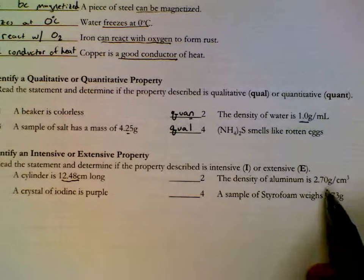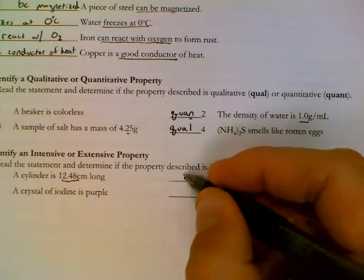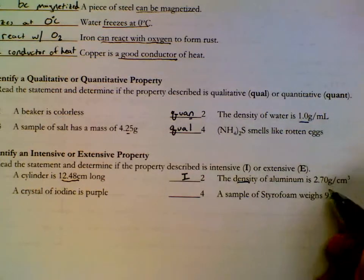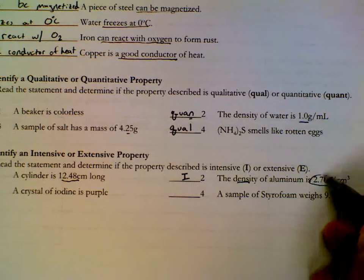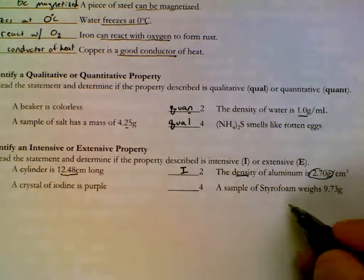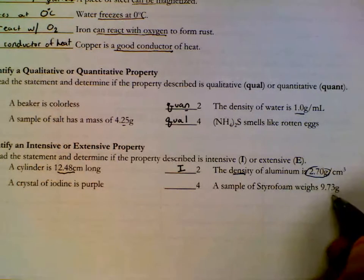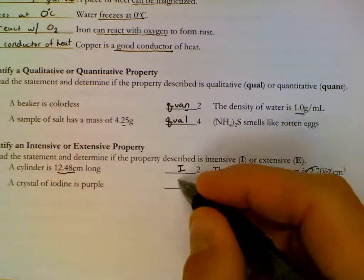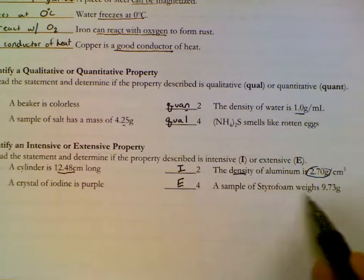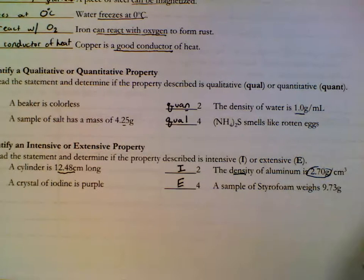The density of aluminum is 2.7 grams per ml. This is intensive. Density is always an intensive property. That one might be something you just need to memorize. Sample of styrofoam weighs 9.73 grams. That's extensive. If I had twice the amount of styrofoam, it would weigh more. That changes my property.